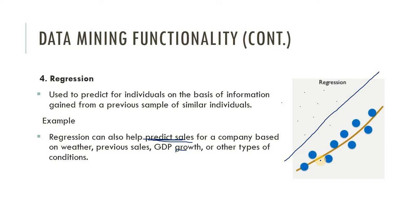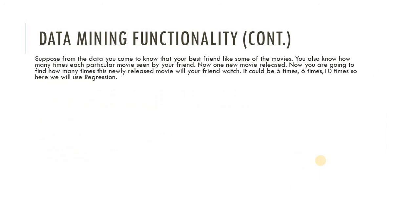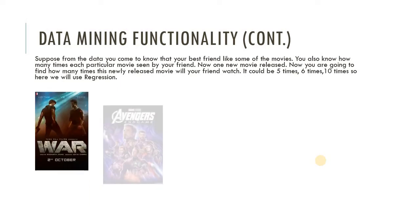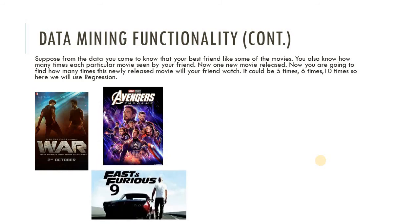Let's understand regression with an example. Suppose from data you know that your best friend likes certain movies — for example, War, Avengers Endgame, and Fast and Furious 9. Now you know that your friend likes action movies. You also know how many times each movie was watched: Avengers Endgame 8 times, Fast and Furious 10 times, and War 6 times. Based on that, you conclude that your friend likes Hollywood movies rather than Bollywood movies. So you have data that your friend likes Hollywood action movies.